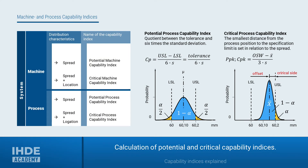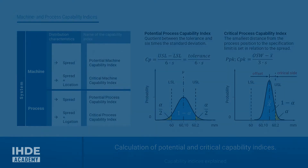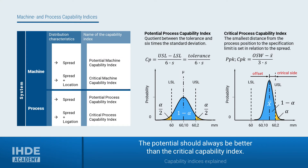One can basically distinguish two capability indices. One only takes into account the spread of the values; the other also takes into account the process location. When calculating the potential for the machine or process, only the spread and the tolerance are taken into account — the tolerance is divided by 6 times the standard deviation. In the case of the critical machine or process capability, the process location is also taken into account. The smallest distance from the process location to the specification limit is set in relation to 3 times the standard deviation. The potential should always be better than the critical index, so that you still have a buffer for any shifts in the process location.